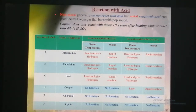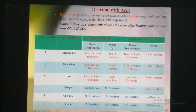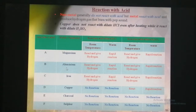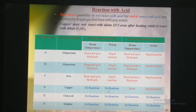If there is no reaction taking place in the cold solution, we have to warm the test tube gently. When we warm the test tube gently, the rate of reaction is increased in the case of magnesium. The same result is found for aluminium and iron. But in the case of copper, charcoal, and sulphur, even when we add dilute hydrochloric acid and apply heat, they do not give any reaction.